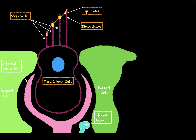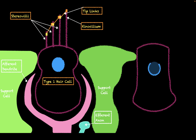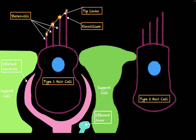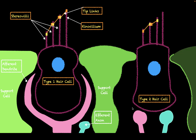Now let's look at the other type of hair cell. The type two hair cell looks very similar to the type one, but one difference is that the bottom isn't as bulbous. The type two hair cell also has many of the same parts as the type one, but one of its distinctive features is that the afferent dendrite that innervates it doesn't envelop the whole cell. We also have support cells forming tight junctions with these hair cells as well.